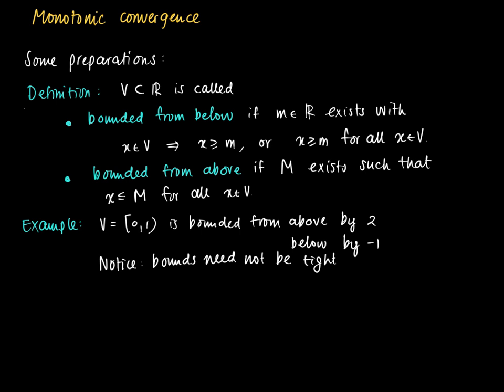But of course if we look closely at V then we can find tight bounds. V is bounded from above by 1 and we cannot pick a lower bound, and it's bounded below by 0. So we have tight bounds small m equals 0 and capital M equals 1. And then if V is bounded from below and bounded from above we will call V bounded. So V is a bounded set since it's bounded from below and above.